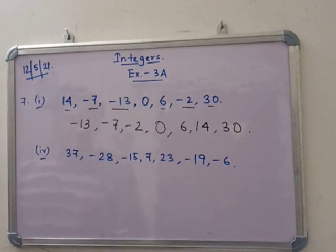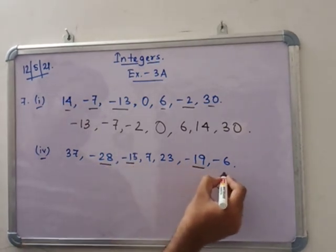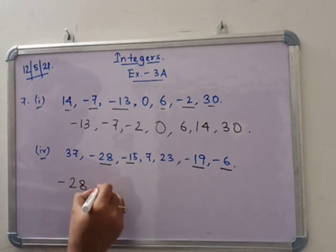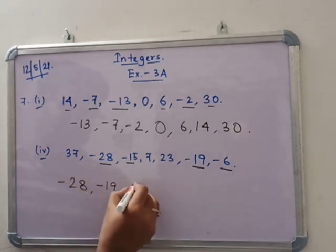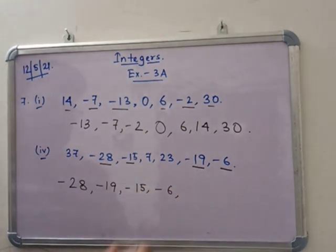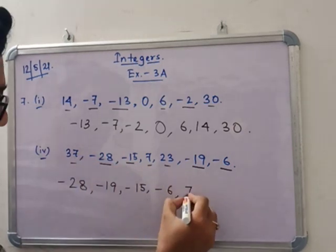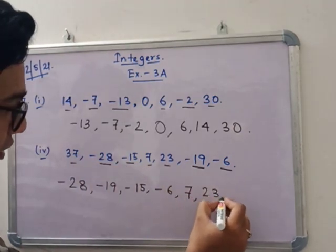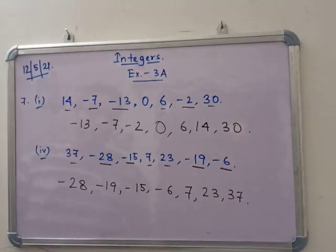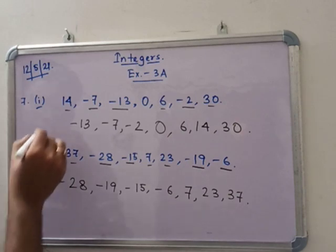Similarly, for the next set: minus 28, minus 15, minus 19, and 6. The ascending order is minus 28, minus 19, minus 15, minus 6. Now the positive integers: 7, 23, 37. So 7, 23, 37. This is the sequence from ascending order.